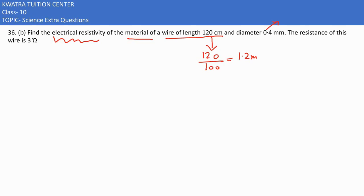You convert 0.4 mm into meters by multiplying it with 1000, so you would get a value of 0.0004 meters. The resistance is given as 3 ohm. The formula we used in the last question was ρ = RA/L.